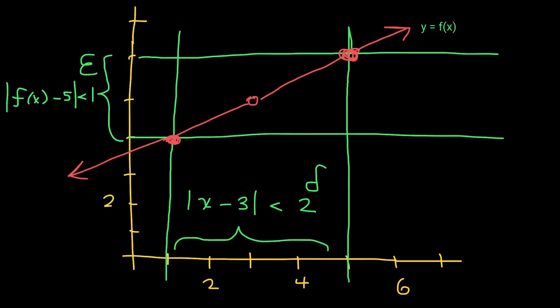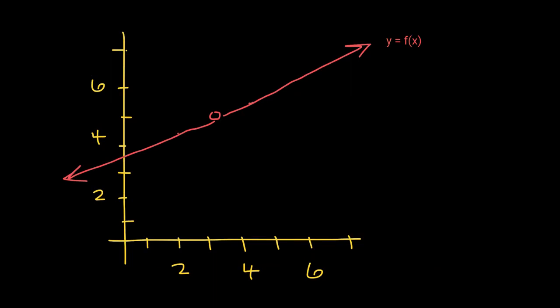Let me show you one more picture using the same linear function. This time, I want all of my function values f(x) within a half unit of 5. The limit of this function as x values approach 3 is 5 — as x values approach 3 from the left and from the right, your function values are approaching 5.